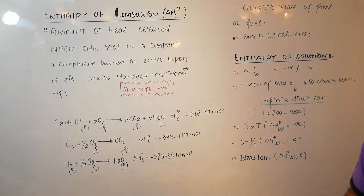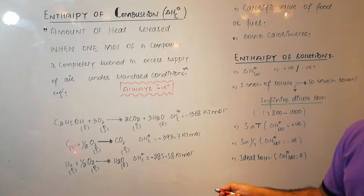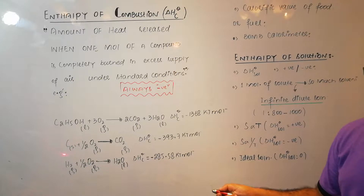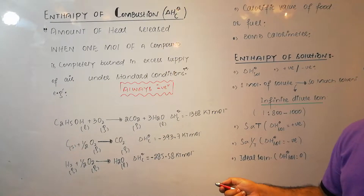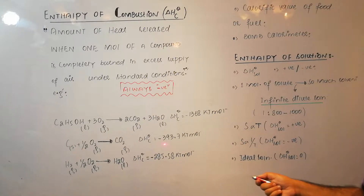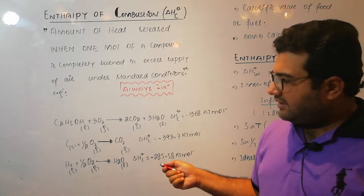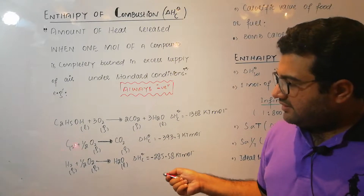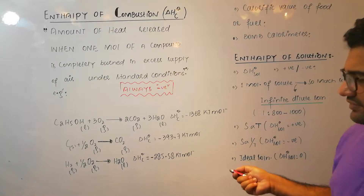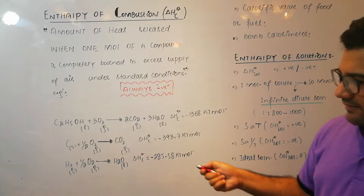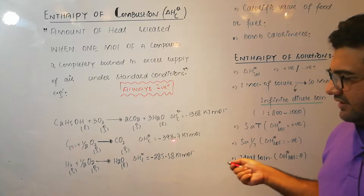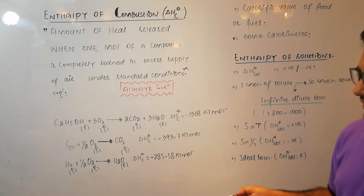Similarly, the enthalpy of combustion of carbon — and this carbon is actually graphite. Its enthalpy of combustion is minus 393.7 kJ per mole. If it were diamond, this value would also change. But this particular case is for graphite.